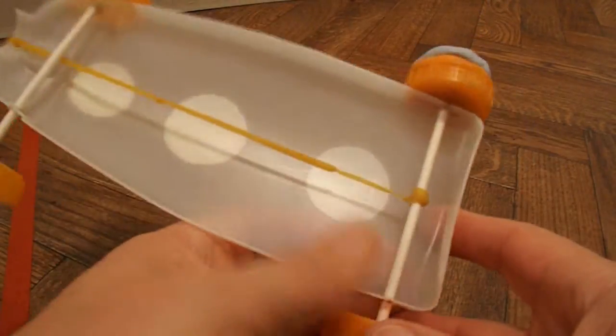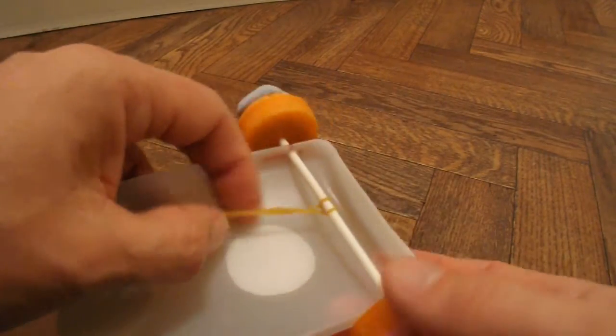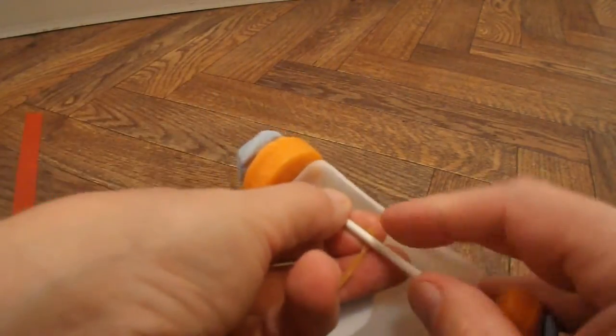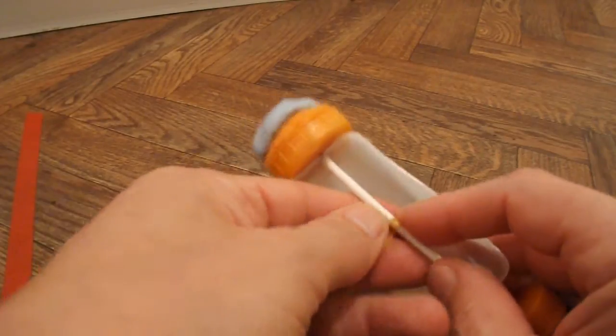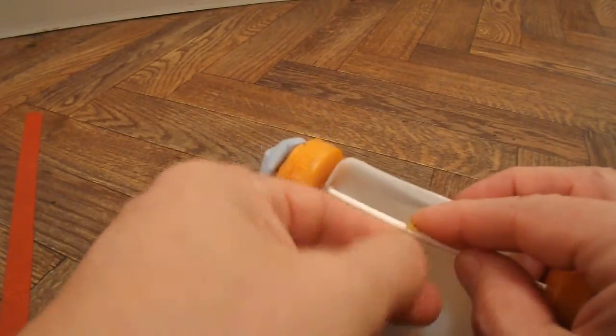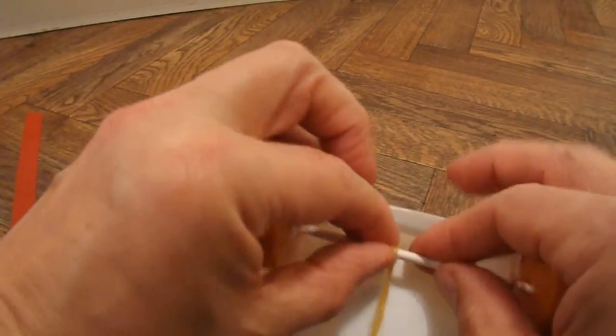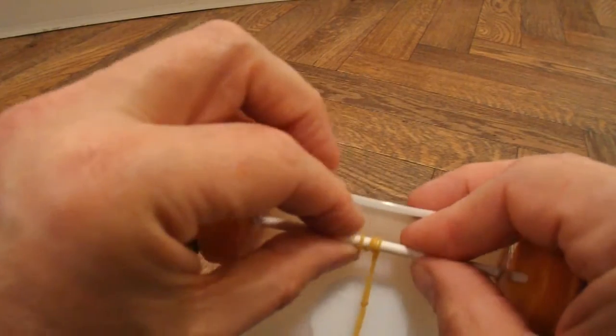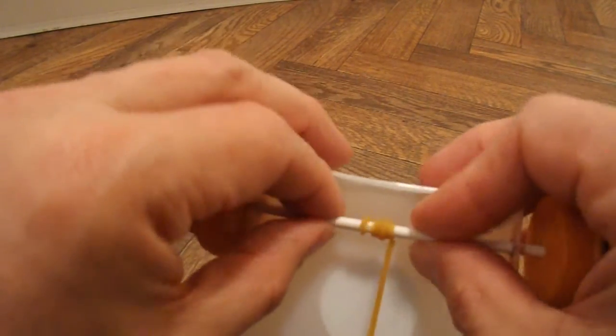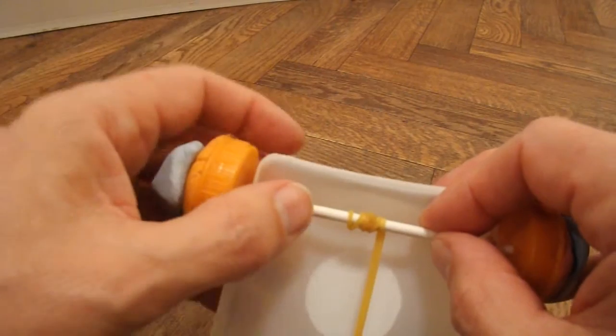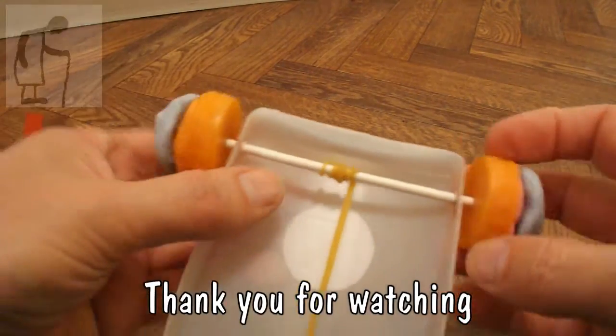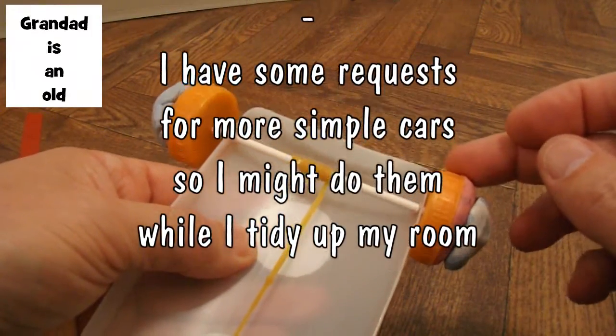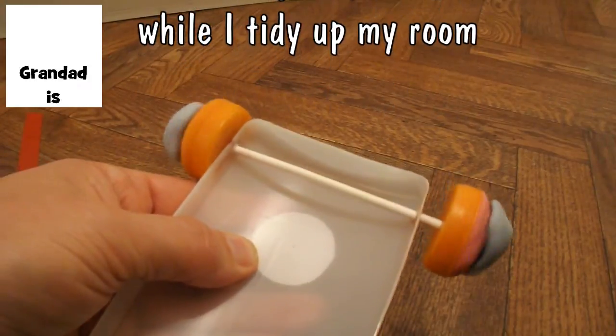And then we wrap the rubber band round the back axle. By wrapping it round itself. So you put a loop over there. And then make sure it goes underneath itself. And that holds it in place as you wind it up. Or you could just put some sort of hook on the back axle and that would hold it in place for you. That's it. Job done.